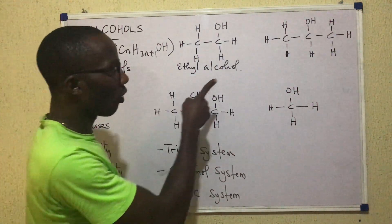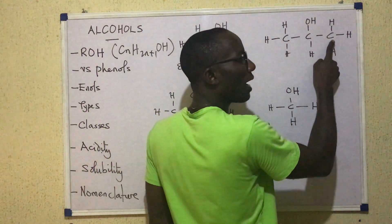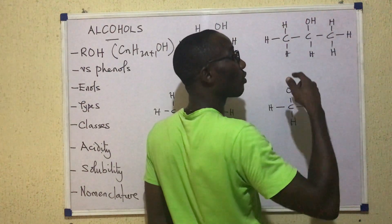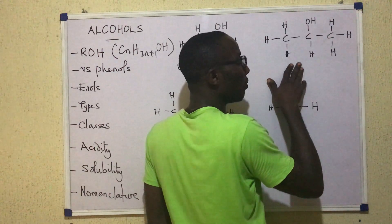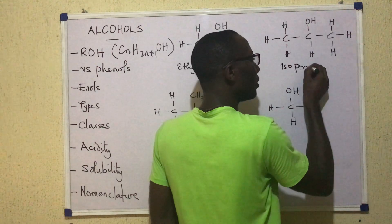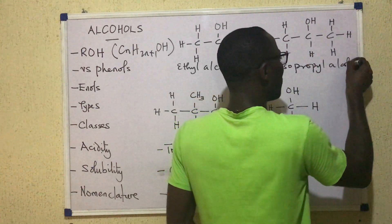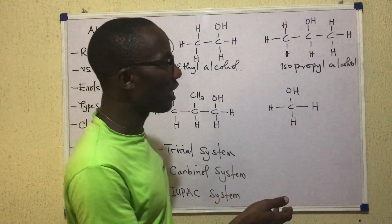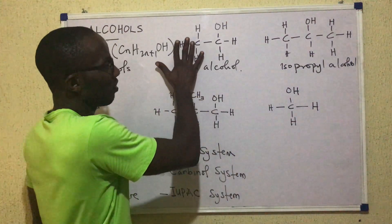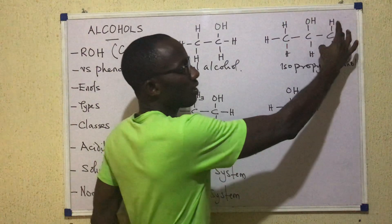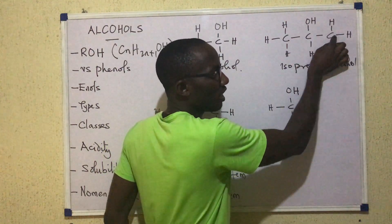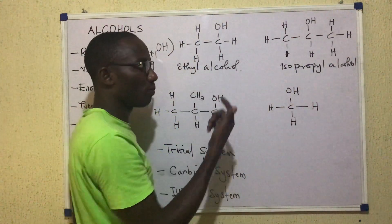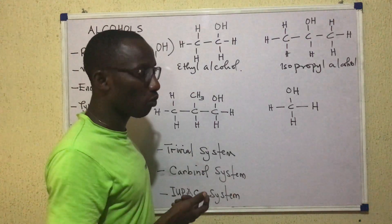The next one would have been propyl alcohol if the OH were on carbon-1, but as it is now, we have to call it isopropyl. What does iso mean? Iso has to do with branching — when you have a propyl group that is branched, you call it iso. So if you imagine bringing the CH3 down and taking the H to the other side, you replace one H with a CH3 group. We call that isopropyl alcohol.